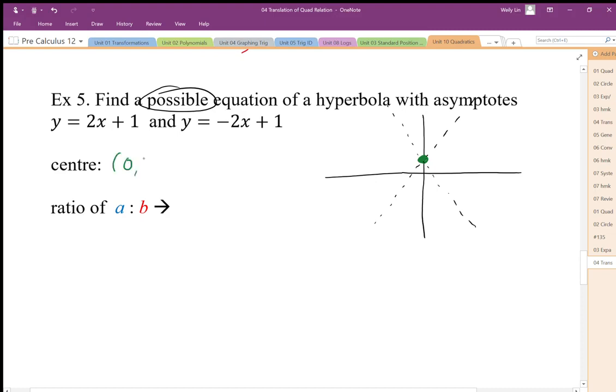Well, nicely, where these graphs intersect is the center of the graph. So our center, in this case, is an easy coordinate to find. We can intersect those two algebraically to find the center if we have to, but there it is. The ratio of a to b is based on the slope. My slope is 2 to 1, so my a to b ratio is 1 to 2. My rise is 2, my run is 1. That doesn't mean that b is equal to 2 and a is equal to 1. But we don't know.